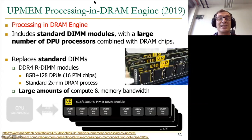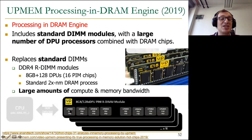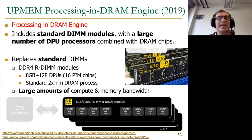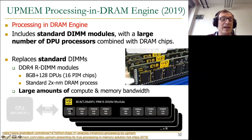An example from industry is upmem's processing-in-memory engine. These folks from upmem, based in Grenoble, France, actually put processing units inside the DRAM chip — not small ones, but relatively big ones they call Data Processing Units. There is one processing unit per bank, and the processing unit can operate on data stored in that bank with low latency, high bandwidth, and low energy because you don't need to move data outside the chip. We're actually working with these folks to look at how to make this easier to program.